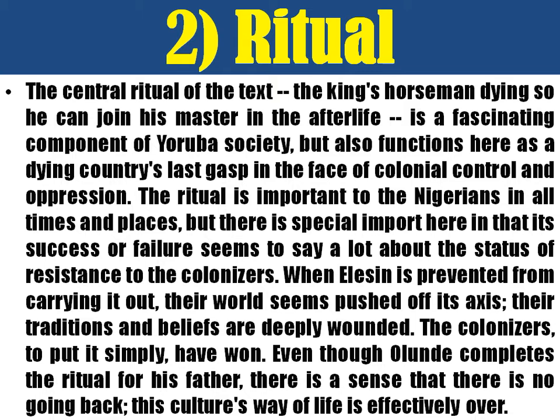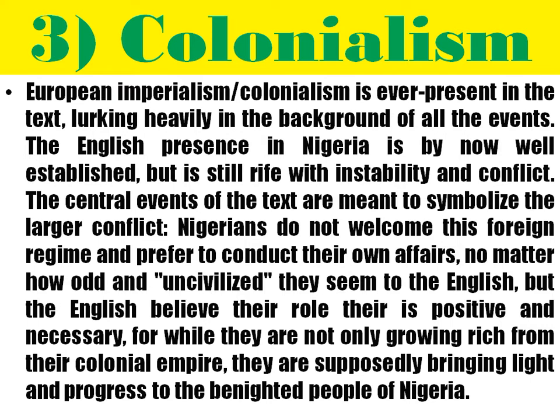That is part of the disruption of tradition by colonialism, which is a major theme in the play. Pilkings, his wife Jane, and the Resident were all interfering with the cultural practices of the Yoruba people. The first interference by Pilkings was taking Olunde away from his father to go to England to study medical science.